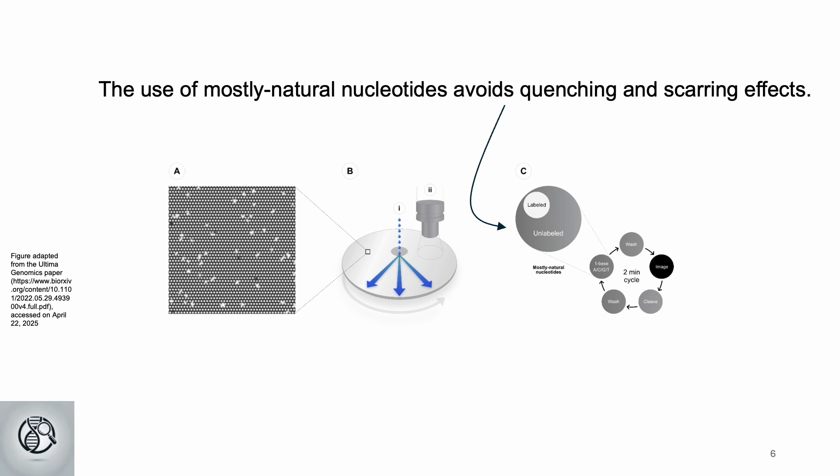Beyond flow-based chemistry, Ultima also uses a mix of fluorescently labeled and natural nucleotides. This lowers costs and reduces quenching and scarring, common issues in traditional NGS technologies.